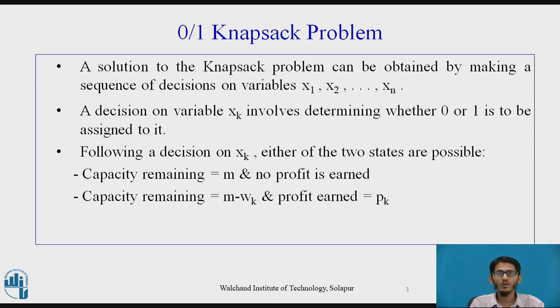And if xk value is equal to 1, in that case, the capacity remaining would be equal to m-wk and the profit earned would be equal to pk. Now wk and pk are the weight and profit associated with the object number k.